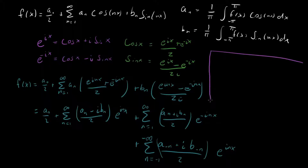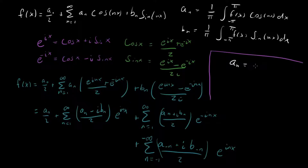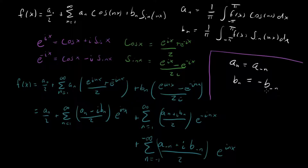Now let's notice something about a of minus n and b of minus n. Looking back at the integral formulas: aₙ only has n appearing in cosine nx, and cosine is an even function, so aₙ equals a of minus n. For bₙ, n appears in sine nx, which is odd, so flipping the sign of n pops out an overall minus sign: bₙ equals minus b of minus n. So we can rewrite a of minus n and b of minus n in terms of ordinary aₙ and bₙ.